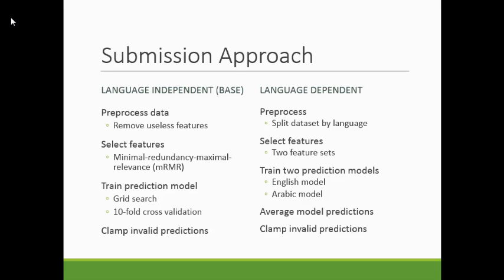The language-dependent approach makes two classifiers and averages their results into one final prediction. The two predictive models are trained on mutually exclusive datasets — in this case separated into an English dataset and an Arabic dataset — and I selected a unique set of features for each dataset. For feature selection I used the same minimal redundancy maximal relevance algorithm, and to end up with a single prediction for each writer I averaged the outputs of both the English and Arabic predictive models. If there were any invalid predictions, I clamped them to their minimum or maximum value.